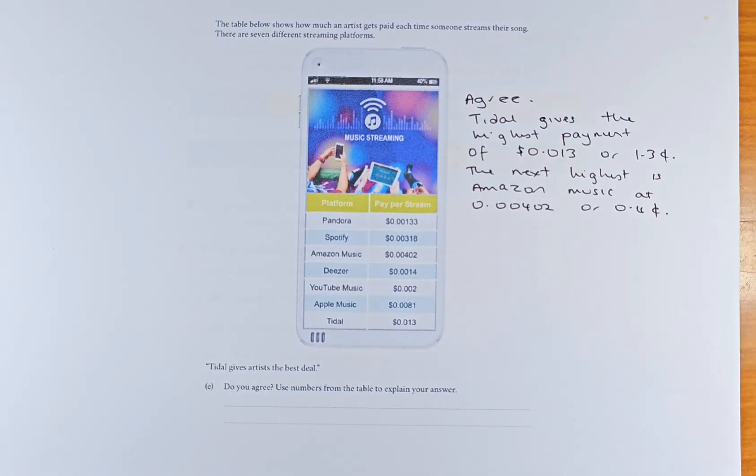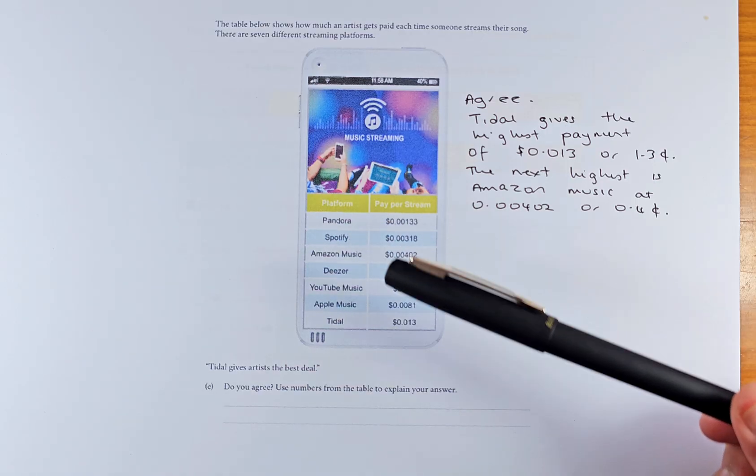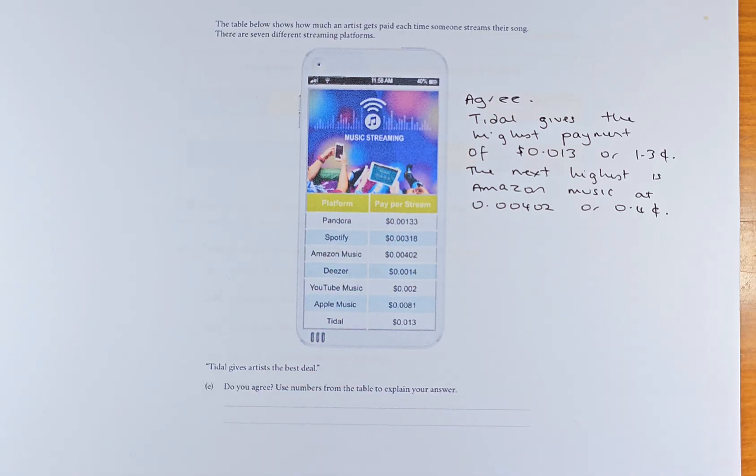And this is question 4E. The table below shows how much an artist gets paid each time someone streams their song. There are seven different streaming platforms: Pandora, Spotify, Amazon, Deezer, YouTube Music, Apple Music and Tidal Music. So they say, Tidal gives the artist the best deal. Do you agree? Use the numbers from the table to explain.